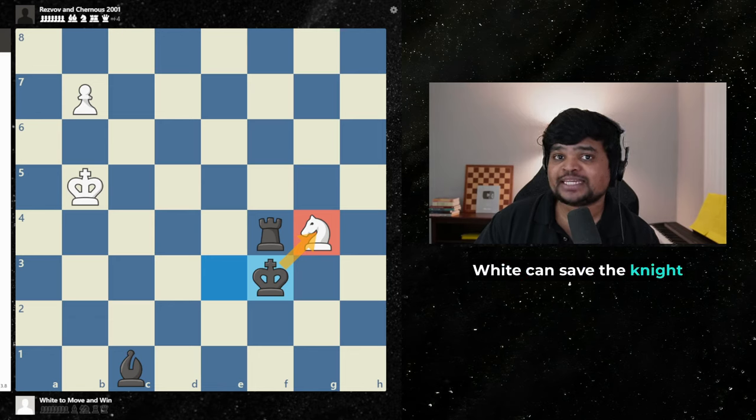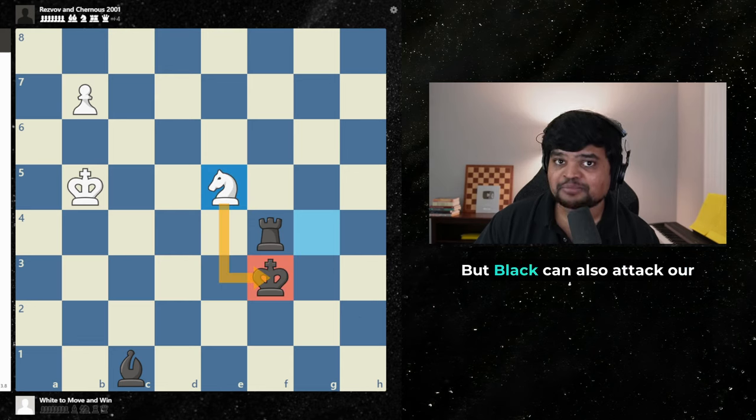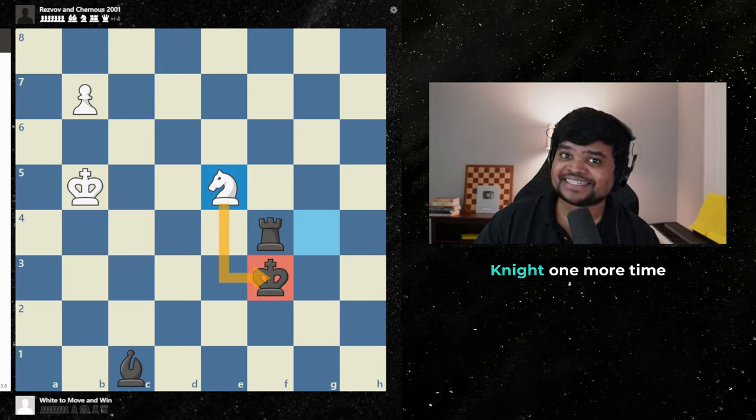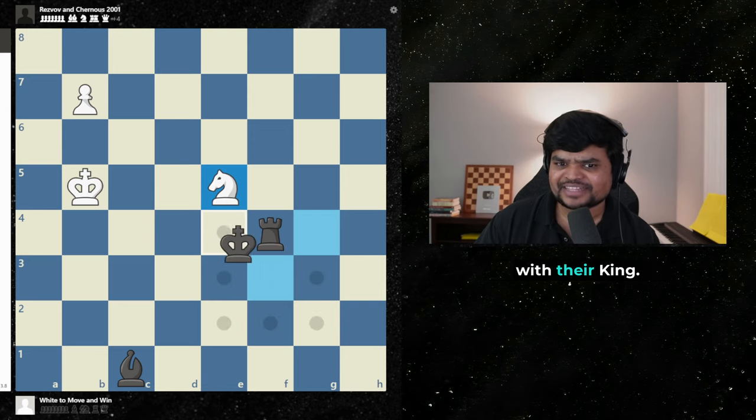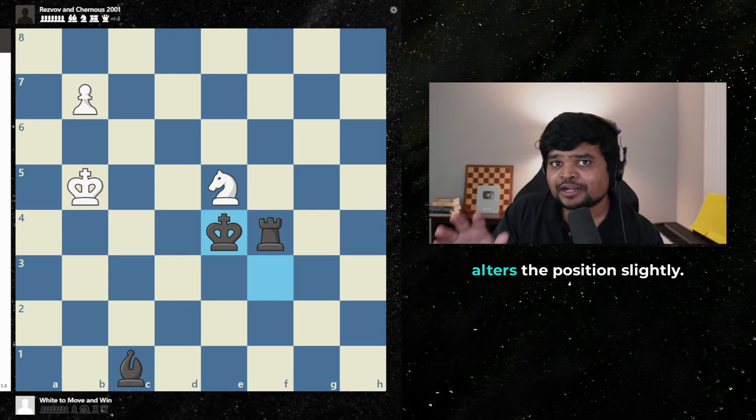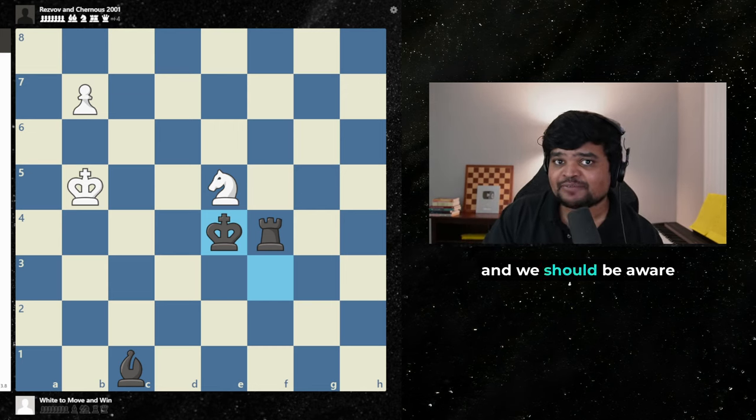White can't save the knight and check again. But black can also attack our knight one more time with their king. However, each check alters the position slightly and we should be aware of the differences.